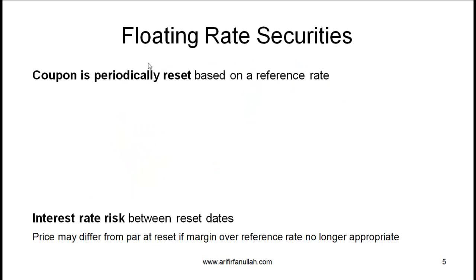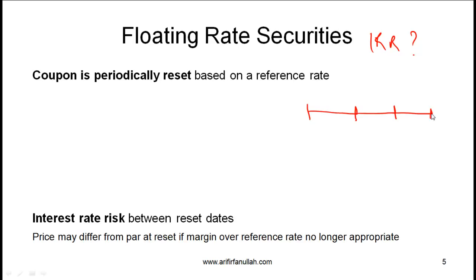Now let's consider floating rate securities. With a floating rate security, the coupon is periodically reset based on a reference rate. Compare a four-year fixed-rate bond making coupon payments of 10, 10, 10, and 10 plus 100 par, with an initial interest rate of 10% so the bond is priced at par (100), versus a four-year floater based on LIBOR plus a 2% spread, also initially equal to 10%, so its price is also 100.